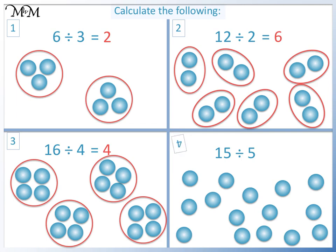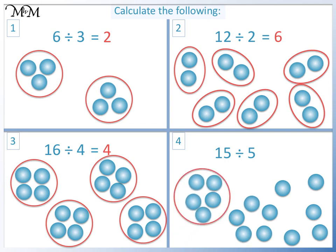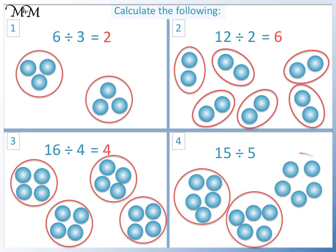Question 4: 15 divided by 5. We are dividing into groups of 5. We have 1, 2, 3 groups of 5. So 15 divided by 5 equals 3.